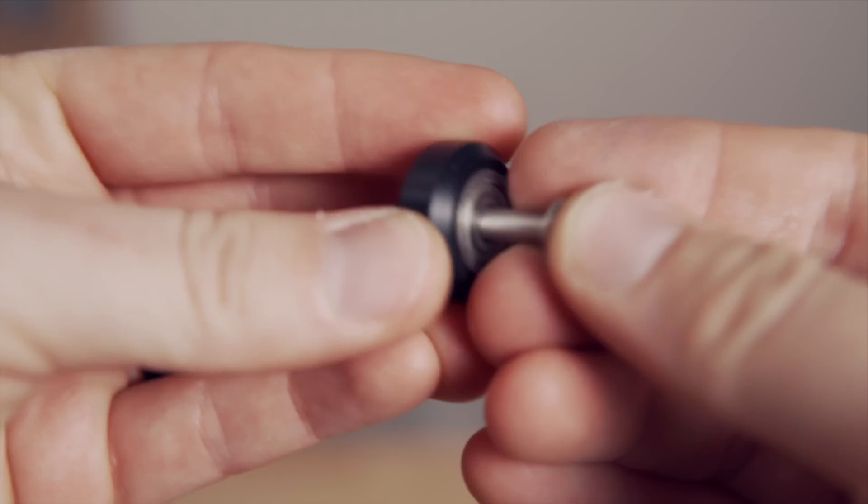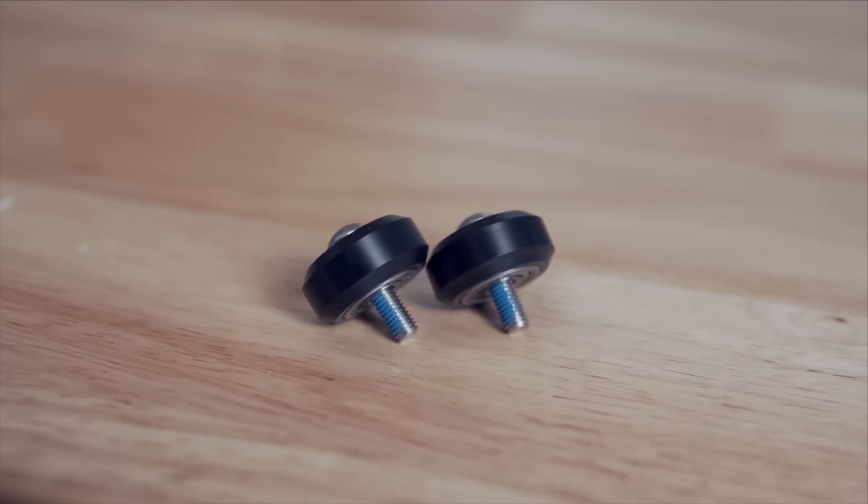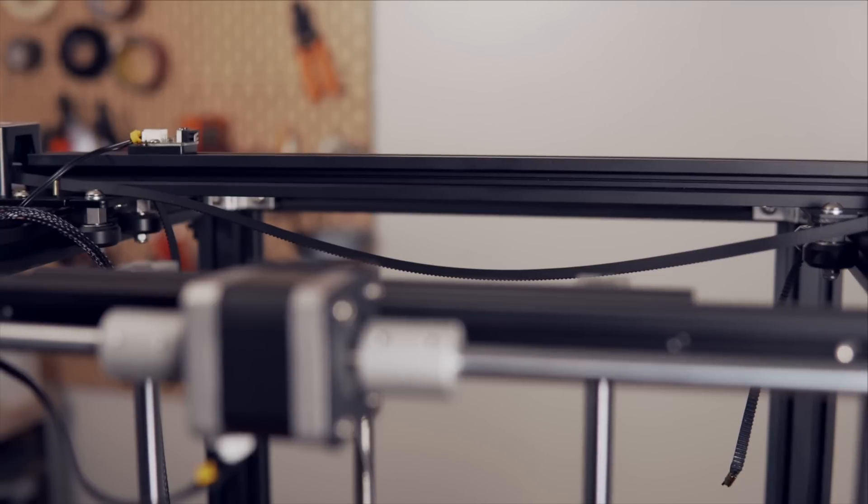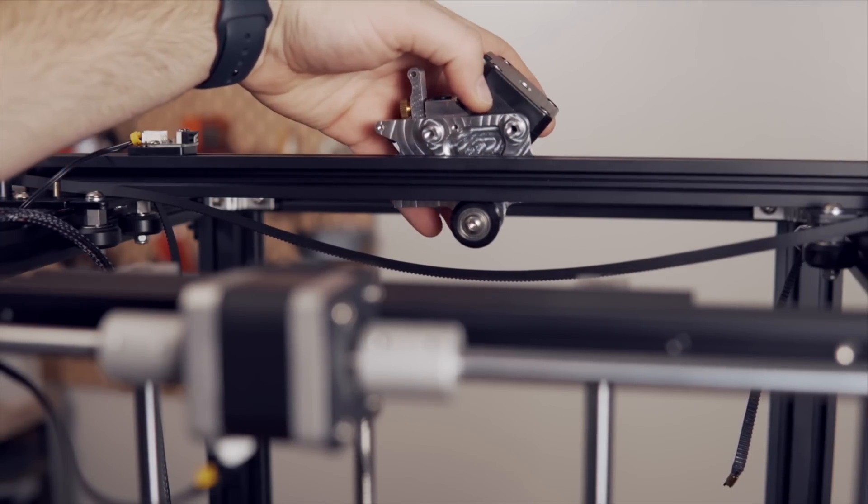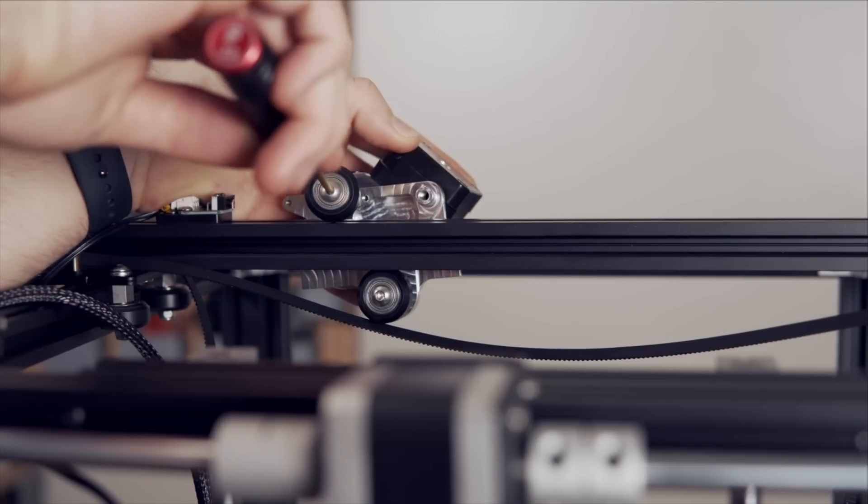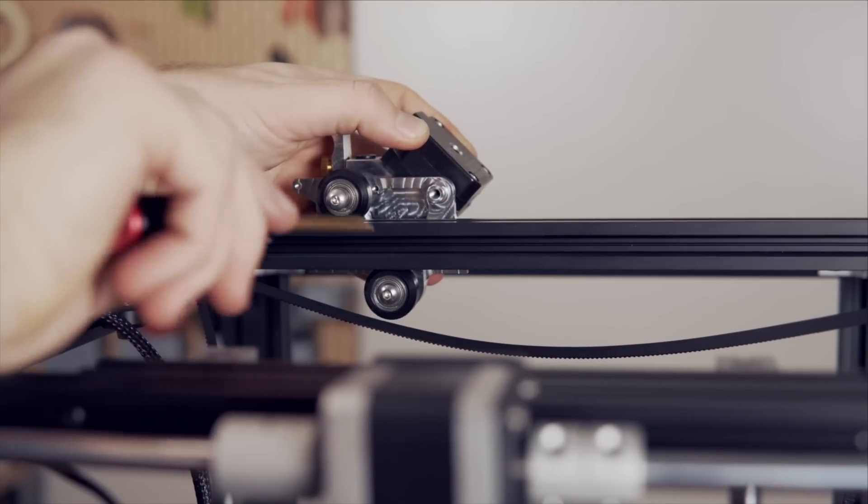Next, grab the two screws with the Loctite, as well as the last two roller wheels, and load a wheel onto each of those screws. For this part, I am standing behind the back of the Ender 5, so just mind your orientation. We'll take that main extruder body and place it over the X rail, and then we'll take those loaded screws with the wheels, and we will tighten them into the threaded standoffs.